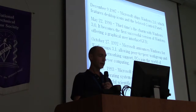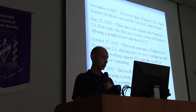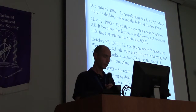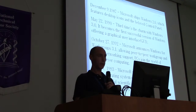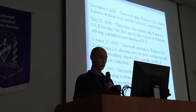On May 22, 1990, the third time's the charm with Windows 3.0, which became the first successful version of Windows offering a graphical user interface. October 27, 1992, Microsoft announces Windows for Workgroups 3.1, allowing peer-to-peer workgroup and domain networking support. PCs joined the world of client-server computing. Then July 27, 1993, Microsoft releases Windows NT 3.1, a 32-bit operating system enabling businesses to use more powerful scientific and engineering applications. Windows NT continues to be the core across Windows today.